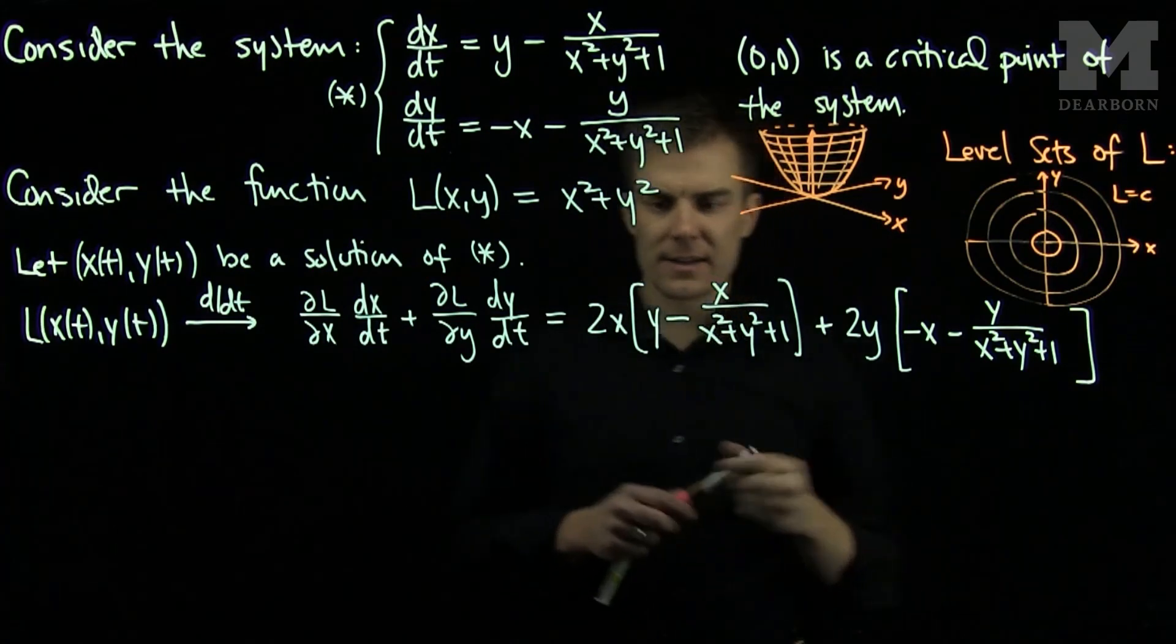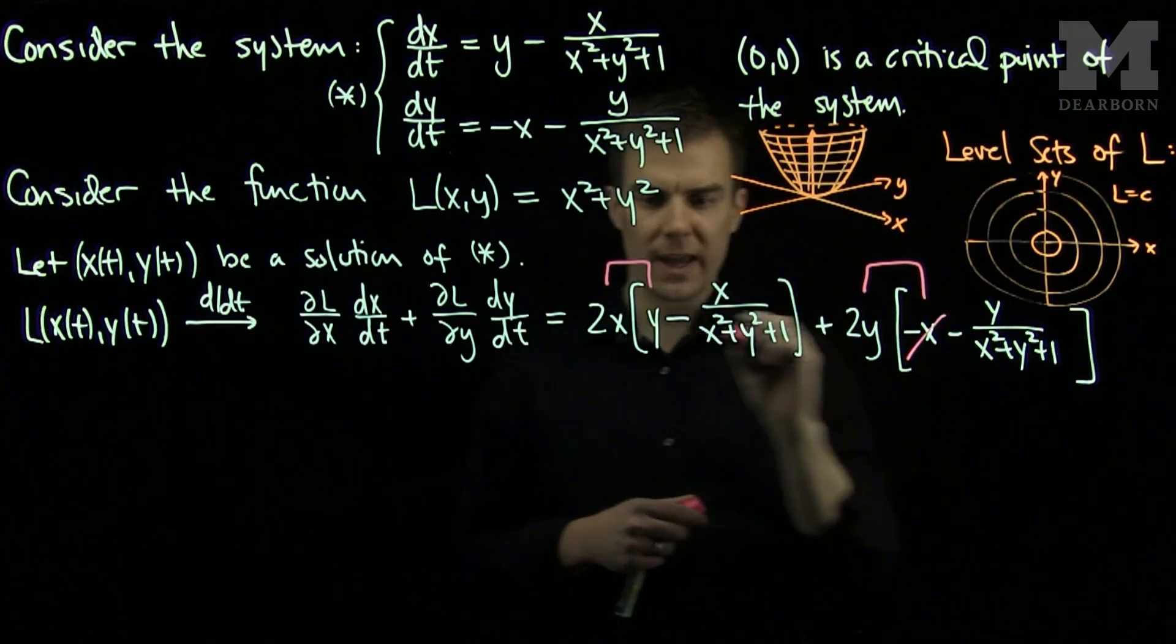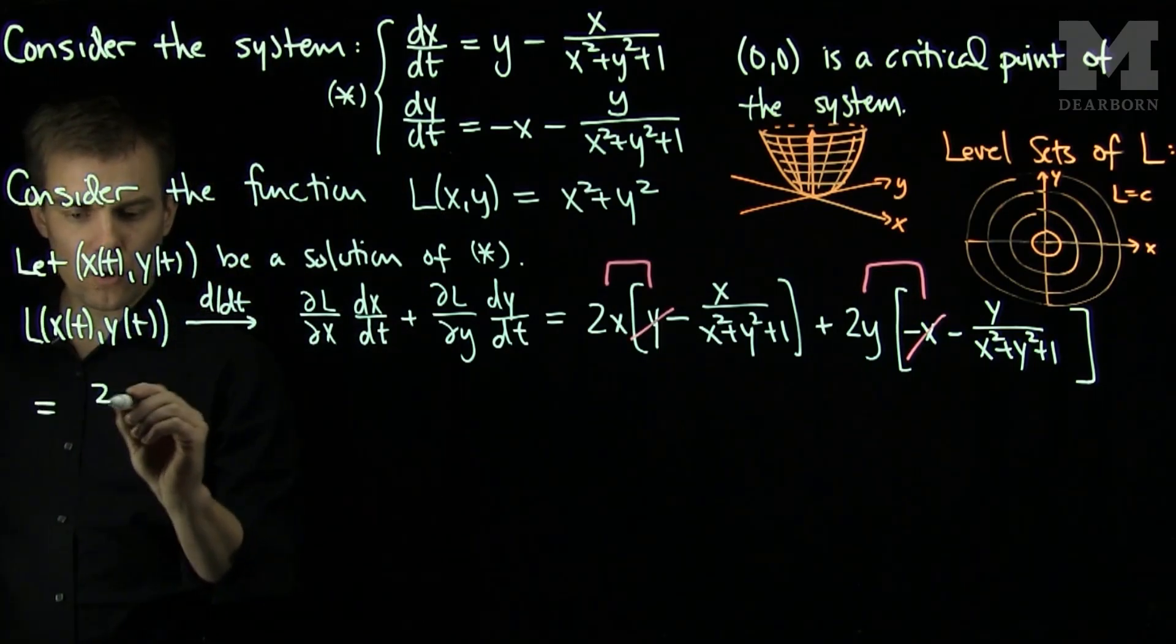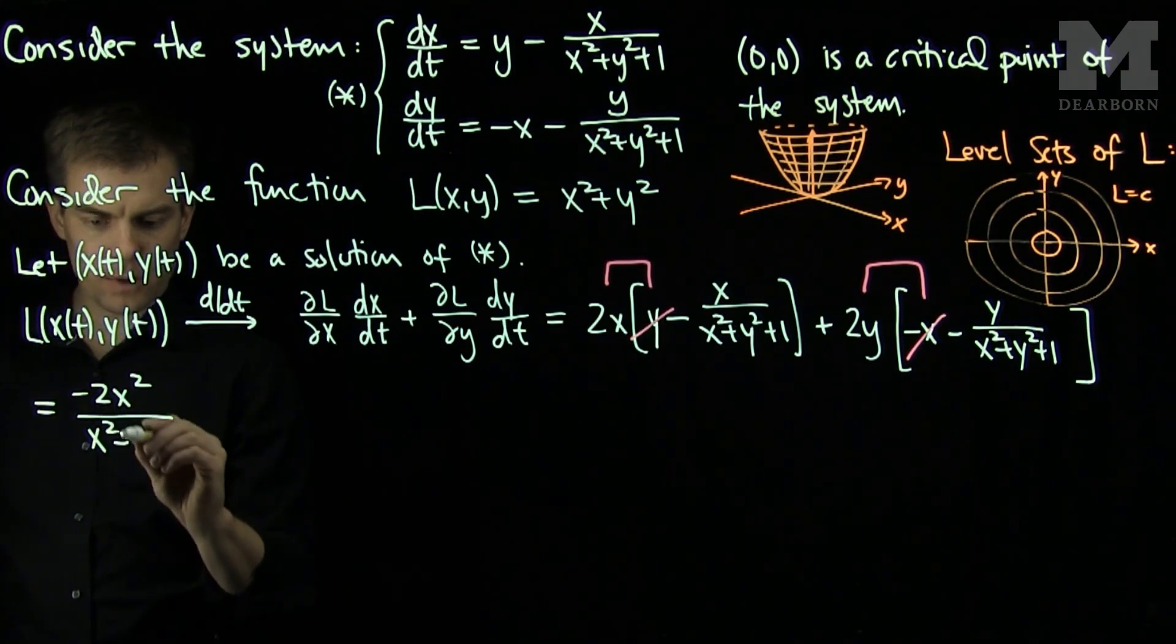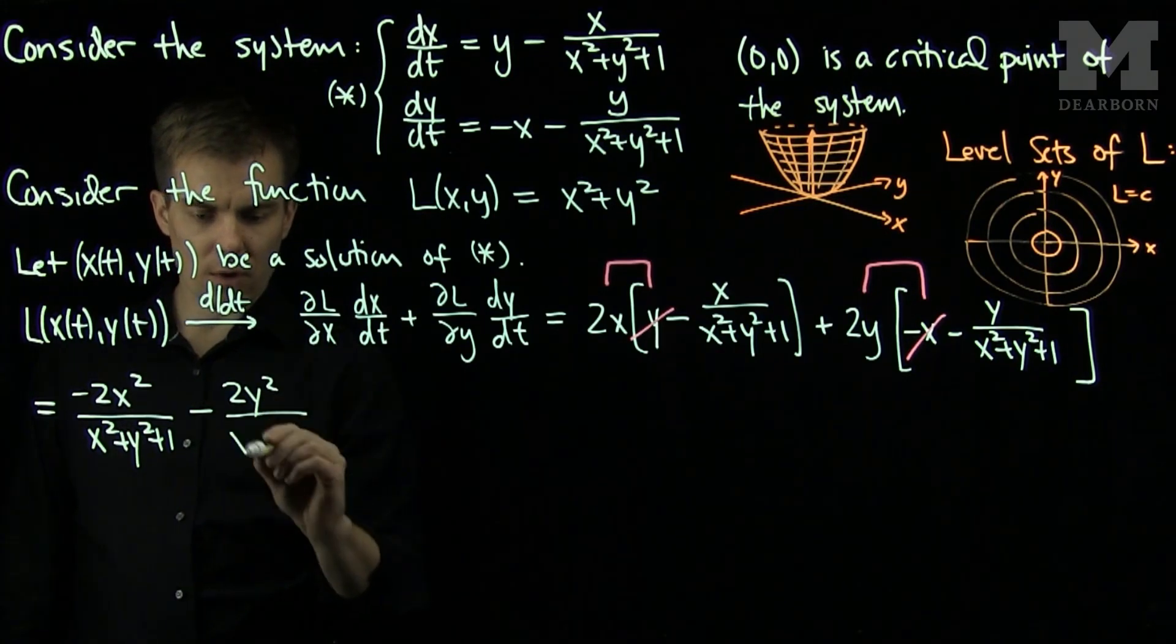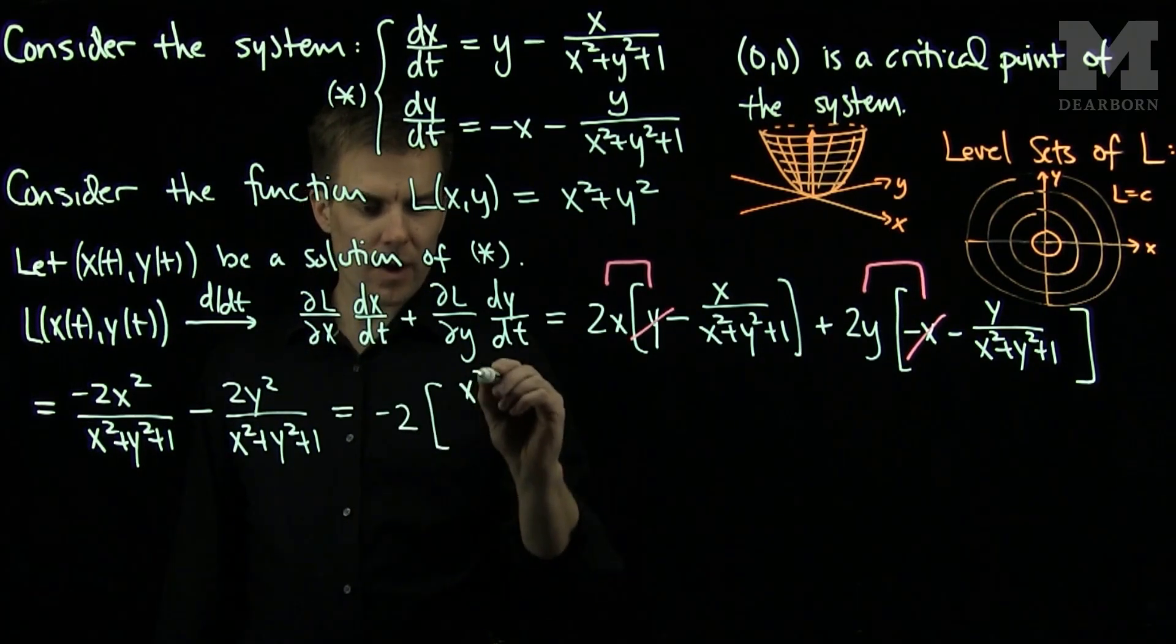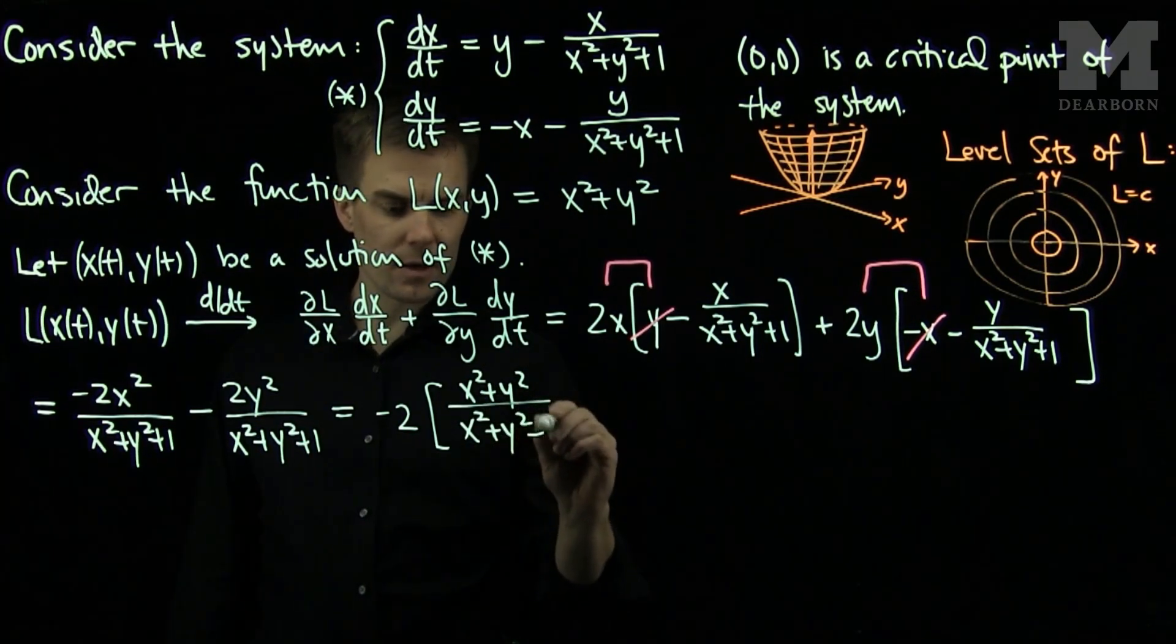Now we see that these terms, 2xy and -2xy, will cancel. And I am left cumulatively with the following expression. I will have -2x²/(x² + y² + 1) and -2y²/(x² + y² + 1), which is -2(x² + y²)/(x² + y² + 1).